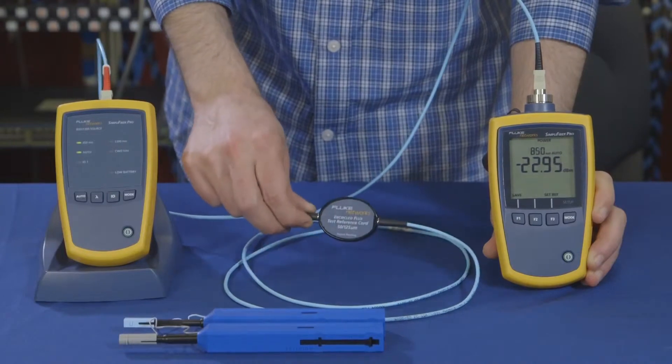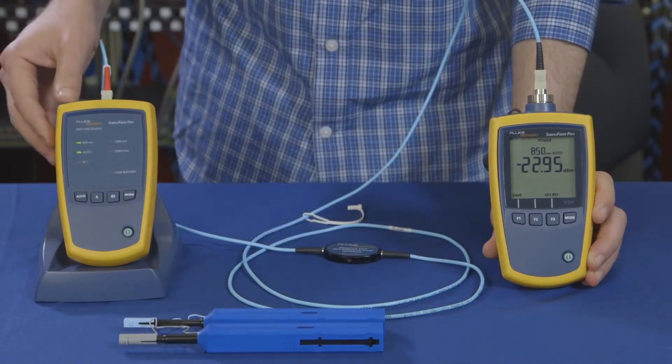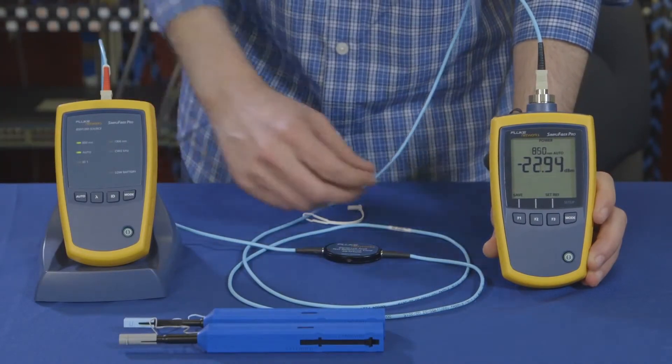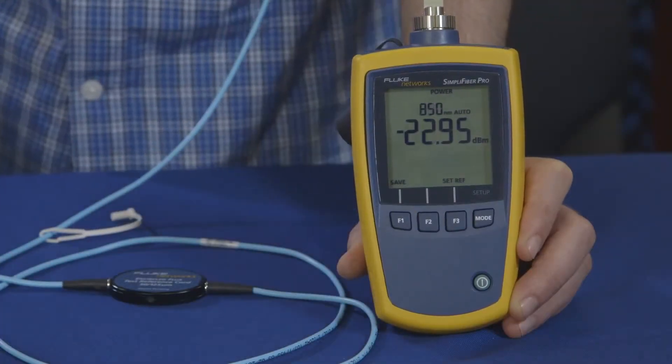Using our encircled flux TRC, we've attached the light source to the power meter. We set reference using the one jumper method.